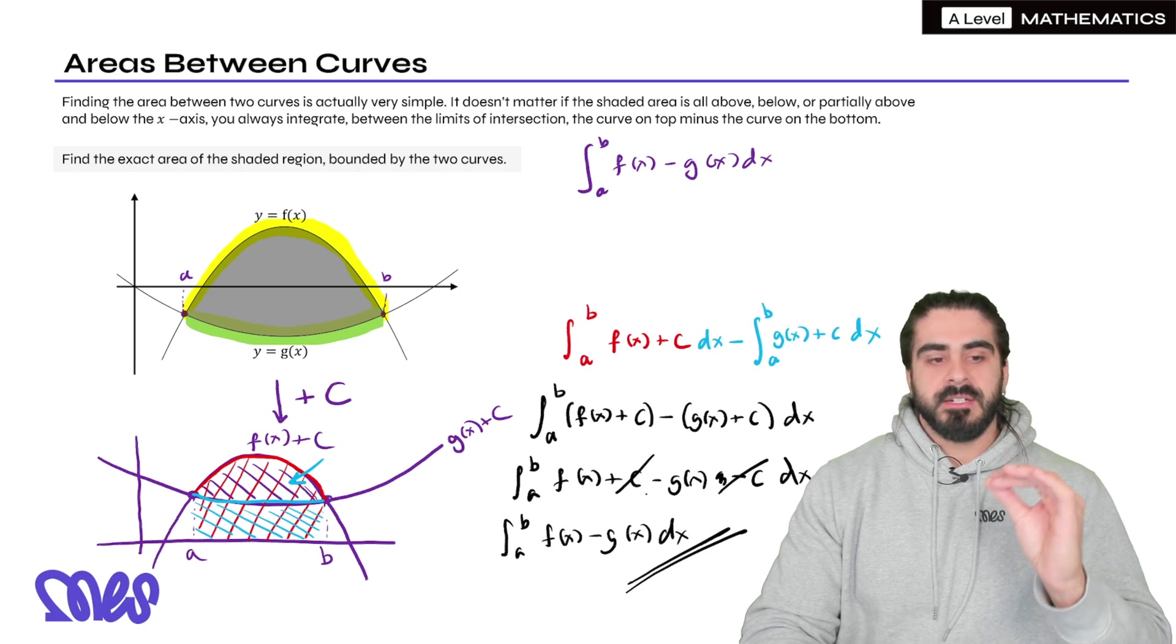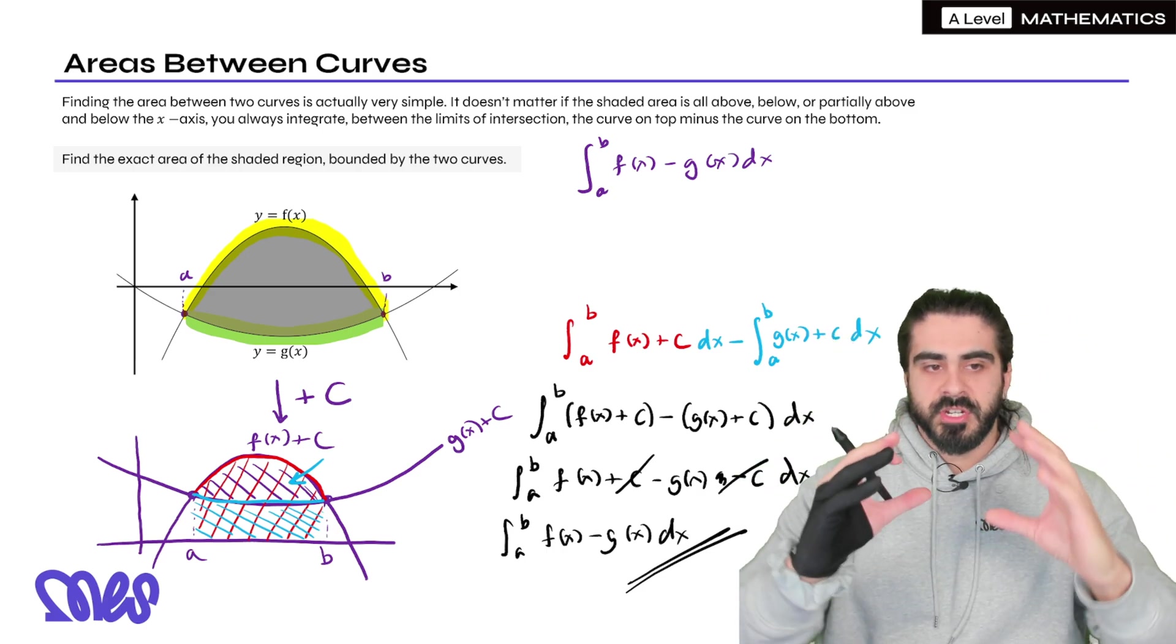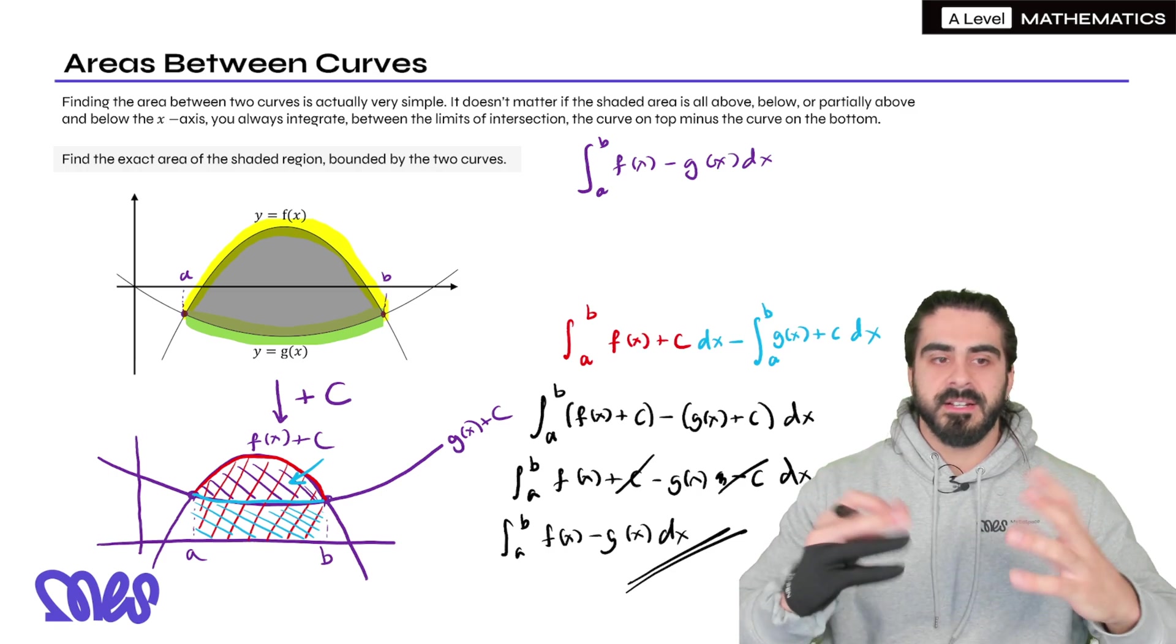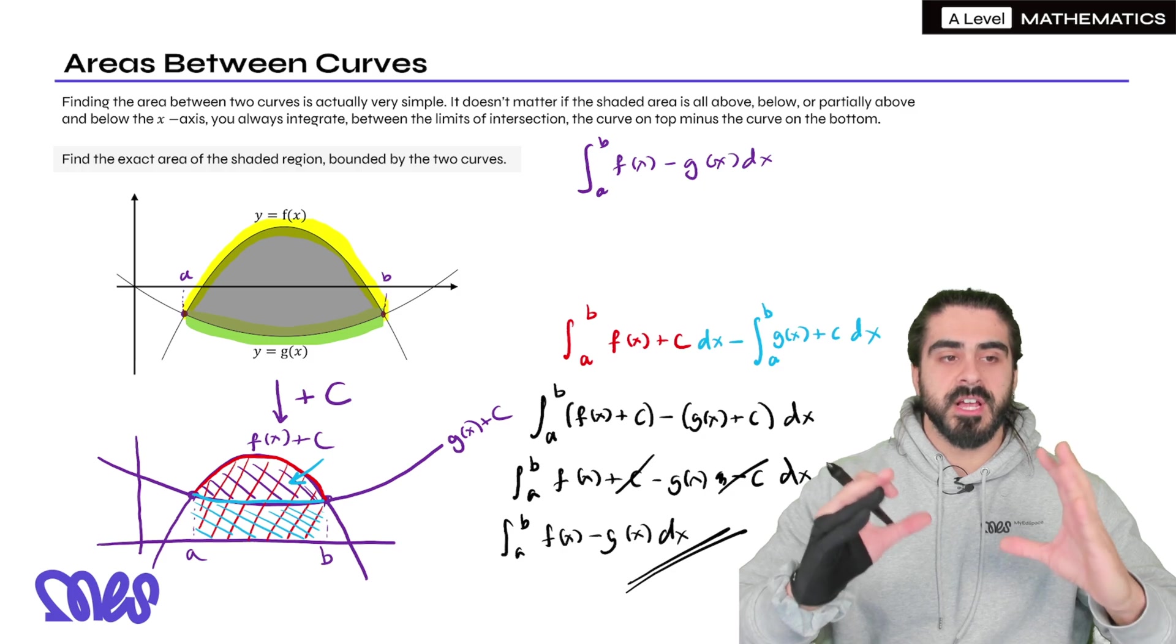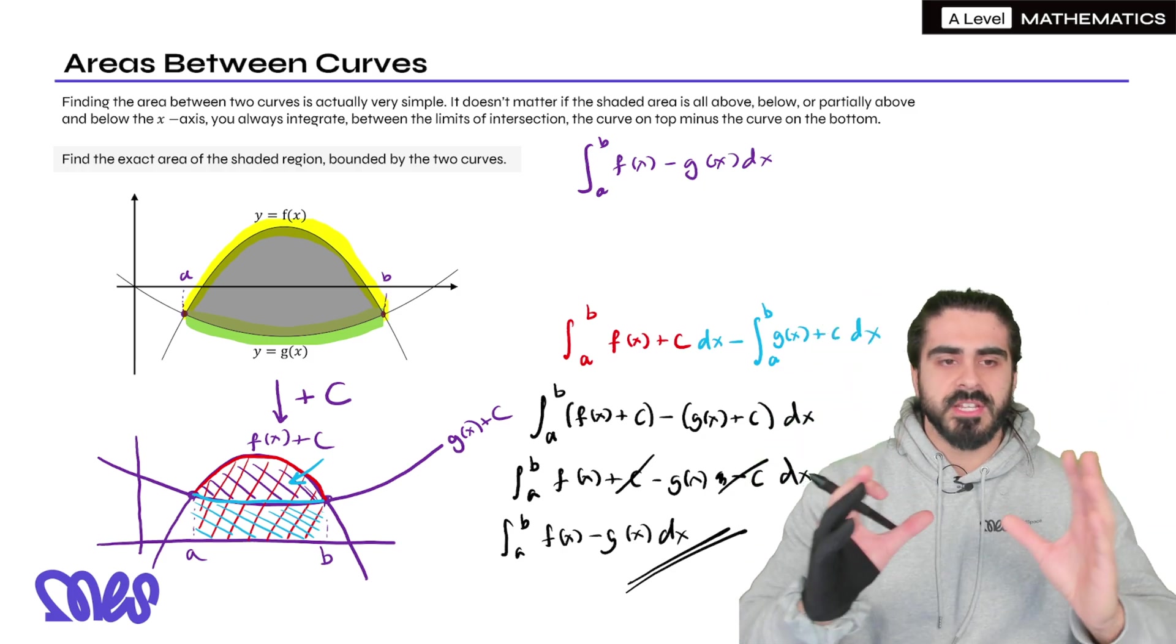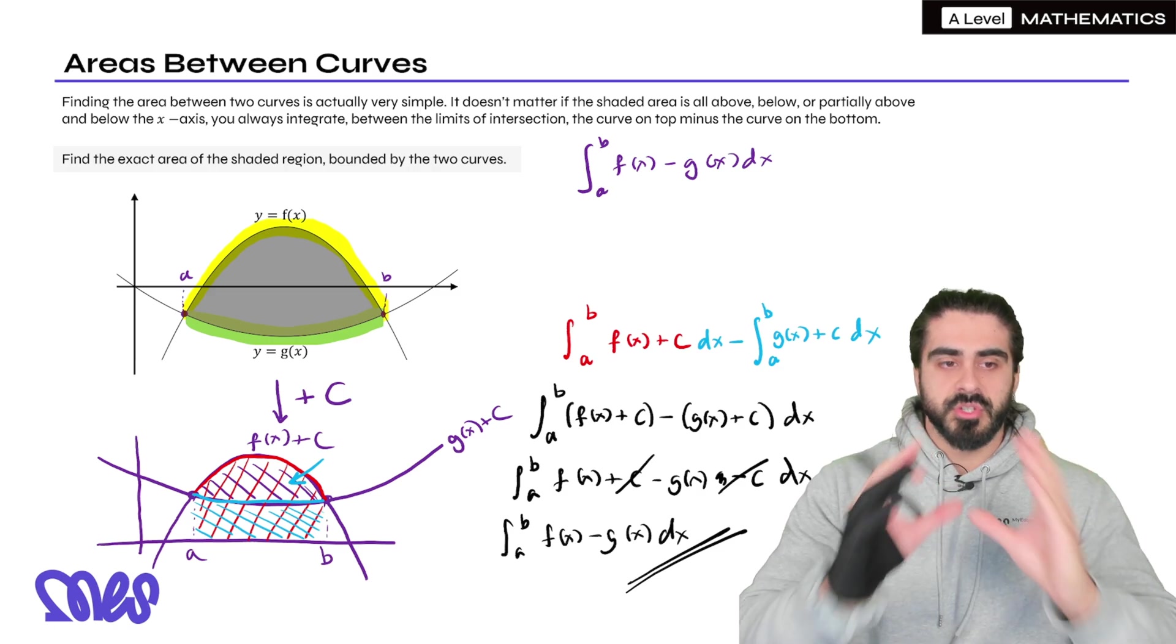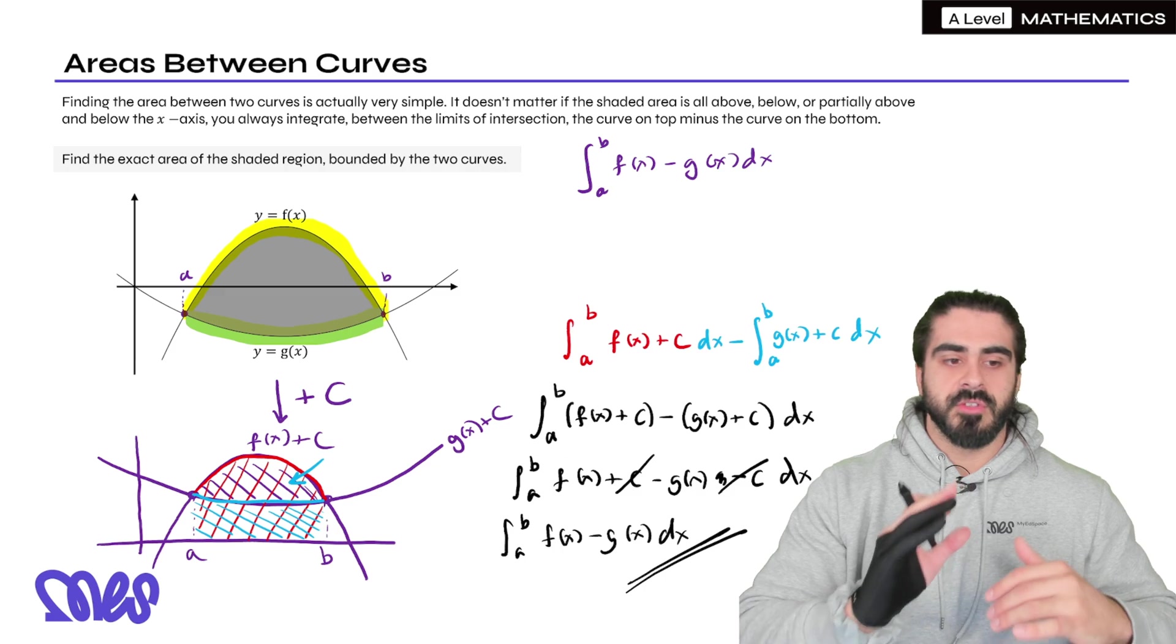So it doesn't matter whether parts of it below, parts of it above, or even a mixture like this question. Theoretically you can just add one constant. You can make that constant as big as you like, just to ensure that all the graphs are above the x-axis. Then you're just integrating between the two limits of intersection, curve on top minus the curve on the bottom.